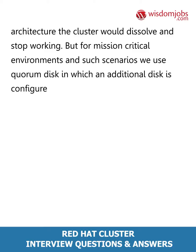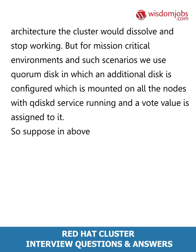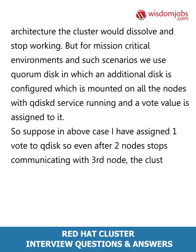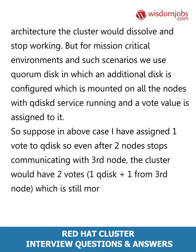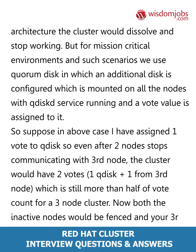But for mission critical environments and such scenarios, we use quorum disk, in which an additional disk is configured which is mounted on all the nodes with qdiskd service running and a vote value is assigned to it. Suppose I have assigned one vote to qdisk — even after two nodes stop communicating with the third node, the cluster would have two votes (one qdisk plus one from the third node), which is still more than half of the vote count for a three-node cluster. Both the inactive nodes would be fenced and the third node would still be up and running as part of the cluster.